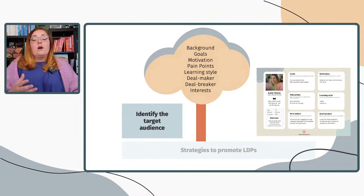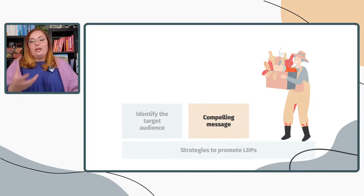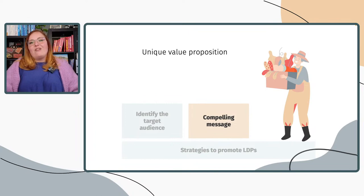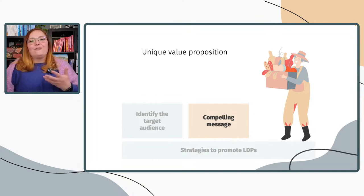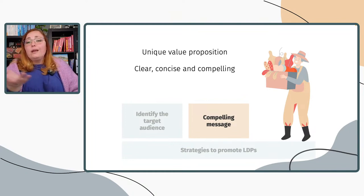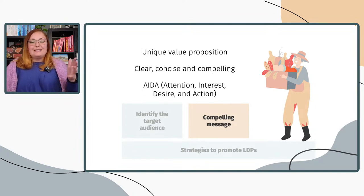Now that we know who our target audience is, we can craft a compelling marketing message that's right for them. The first thing you want to include is your unique value proposition — in other words, what are the benefits? What will the person get out of this program? The 'what's in it for me?' One marketing model I've found really useful for this is the AIDA framework, which stands for Attention, Interest, Desire, and Action.